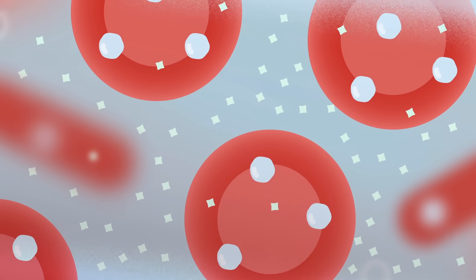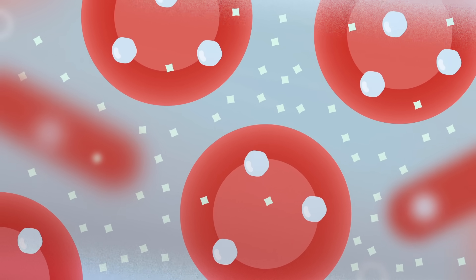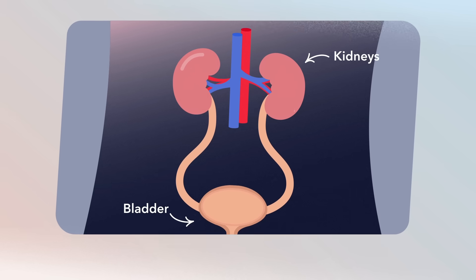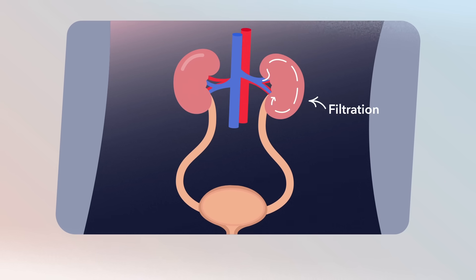To relieve the resulting pressure difference, water flows out of your cells. Your kidneys use this water to begin removing the excess salt, but they require much more fresh water to actually flush it all out.